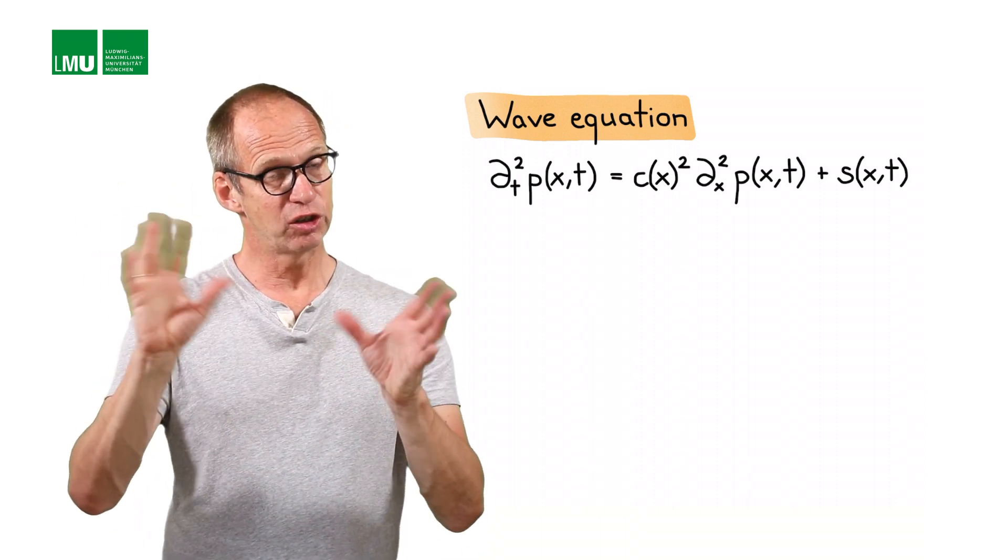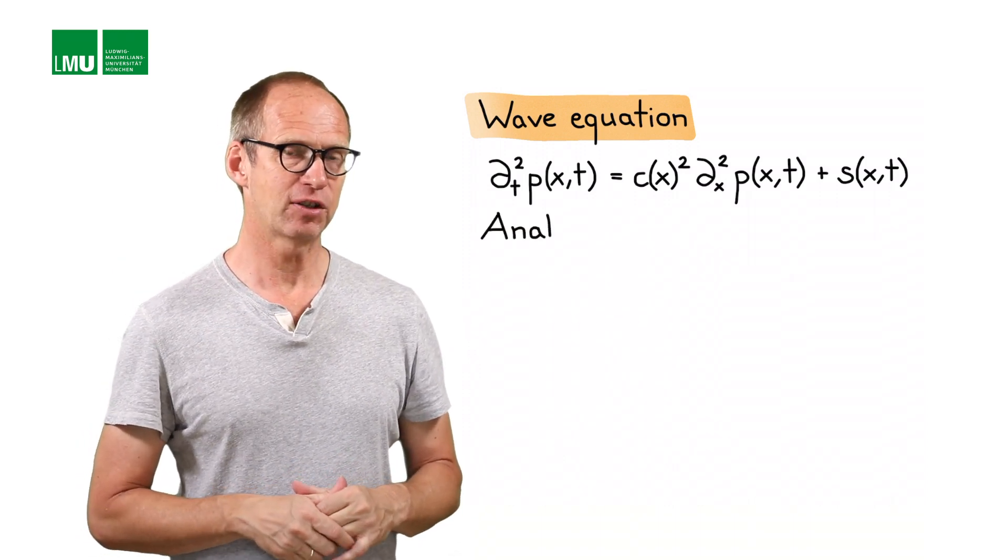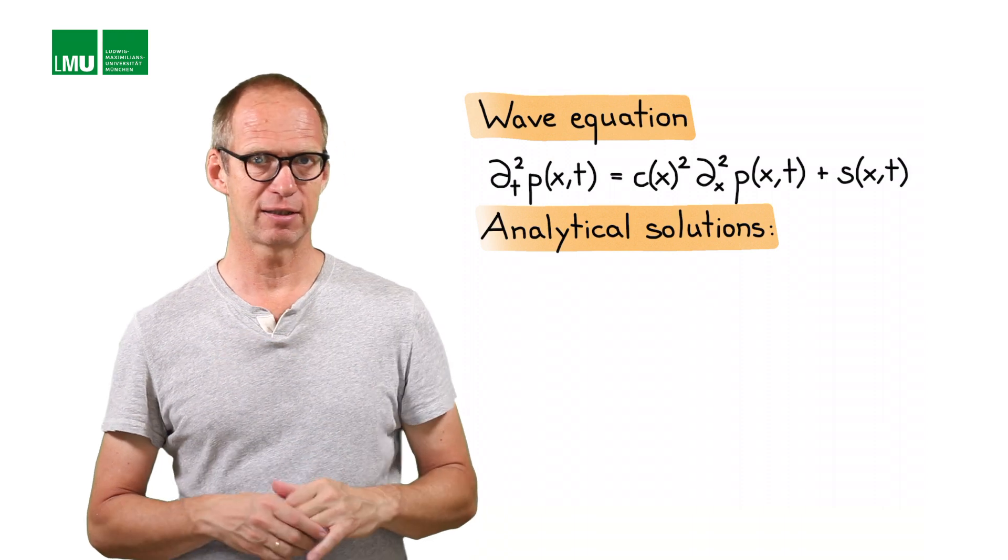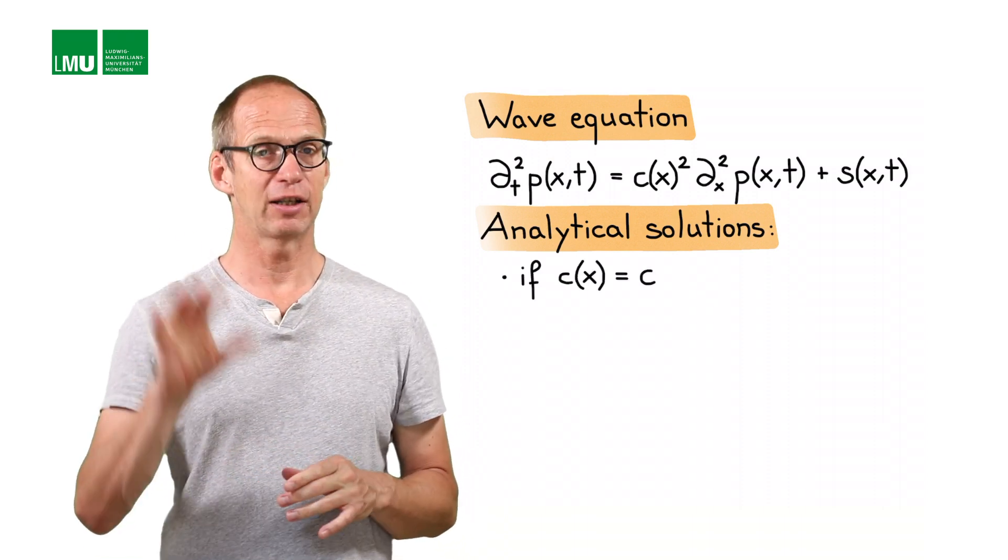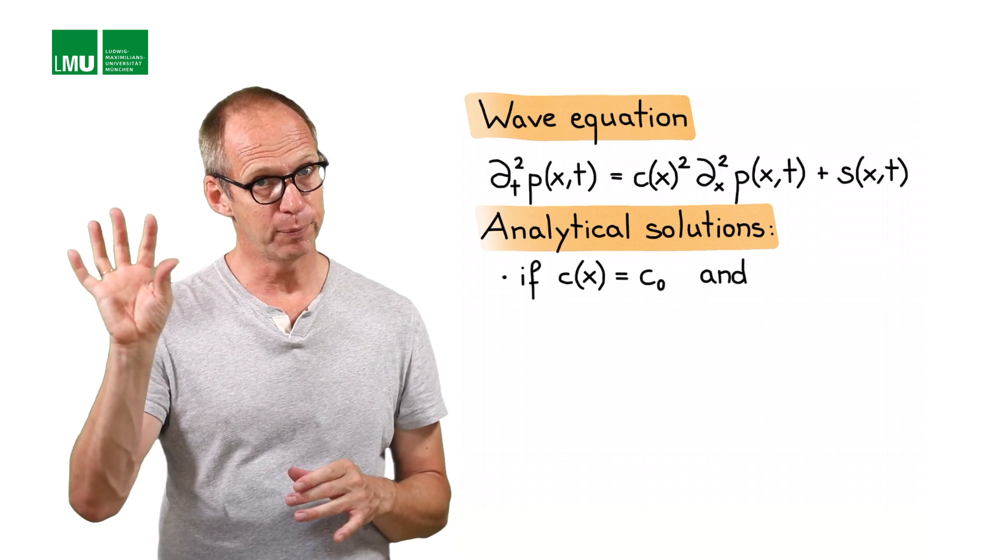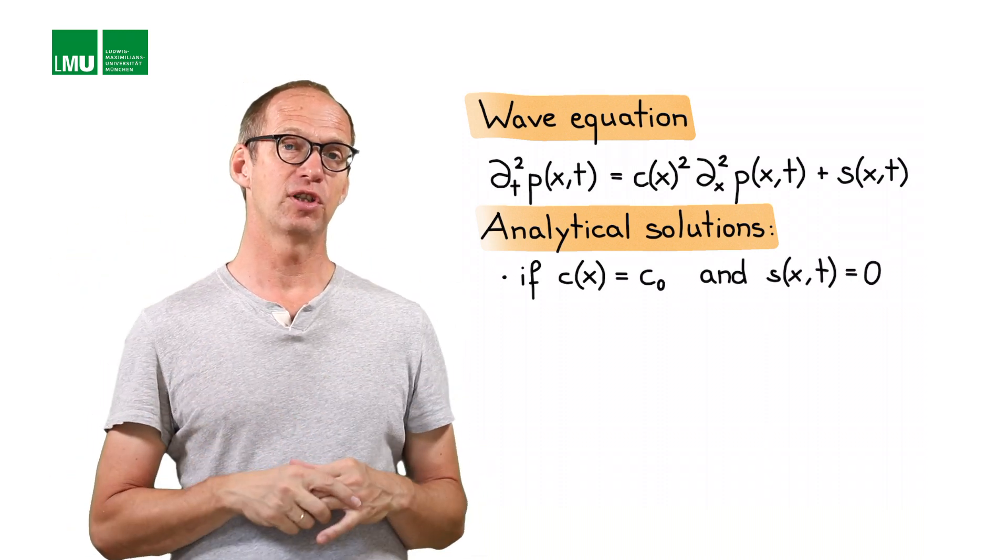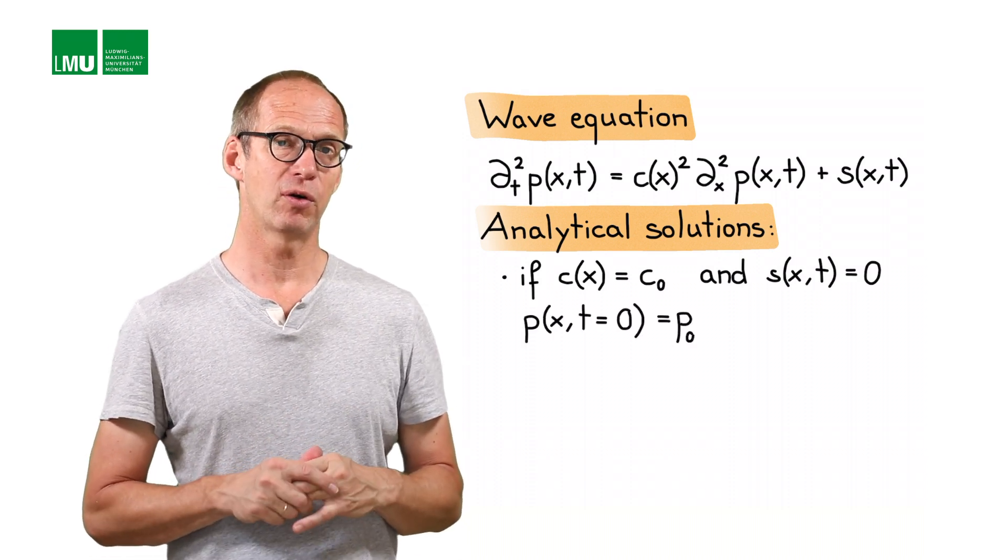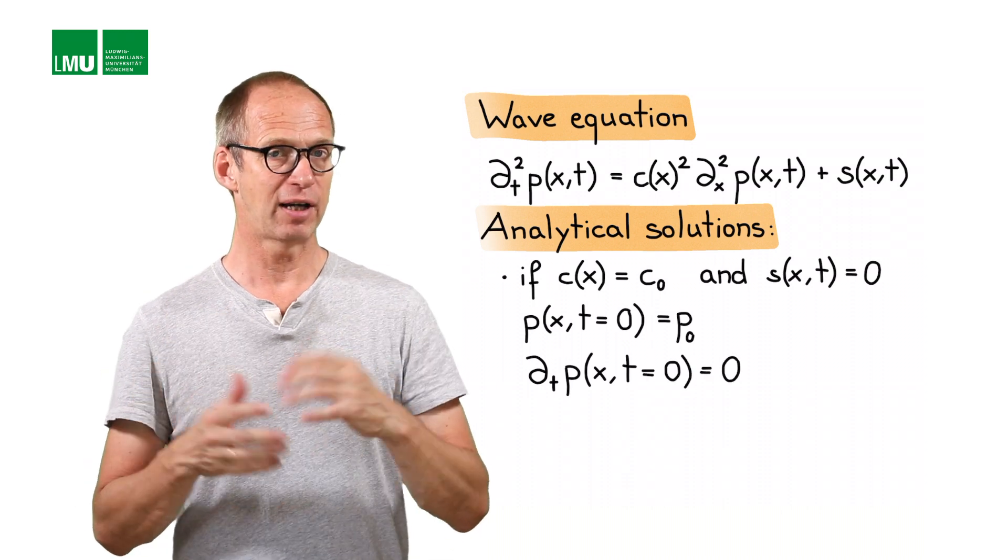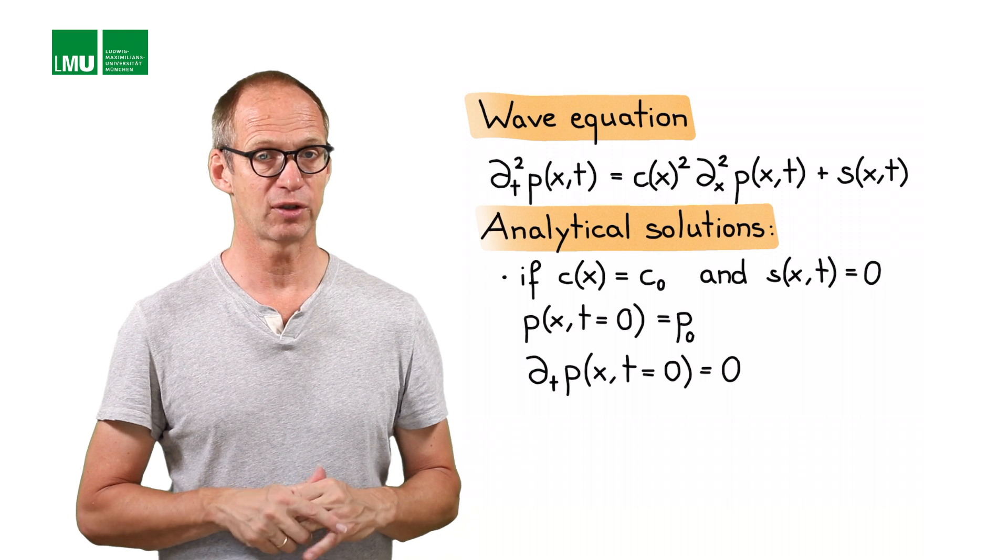There are two situations where we can actually find analytical solutions. If c is not a function of x, and we avoid the source term, we have with an initial condition p at t equals 0 equals p0 and also the gradient of p being 0, we can find analytical solutions. We'll derive that later and show you the result.